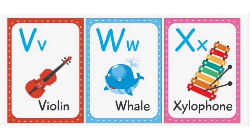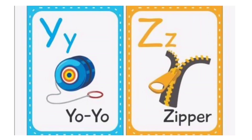X for Xylophone. X-Y-L-O-P-H-O-N-E. Xylophone. Y for Yoyo. Y-O-Y-O. Yoyo. Z for Zipper. Z-I-P-P-E-R. Zipper.